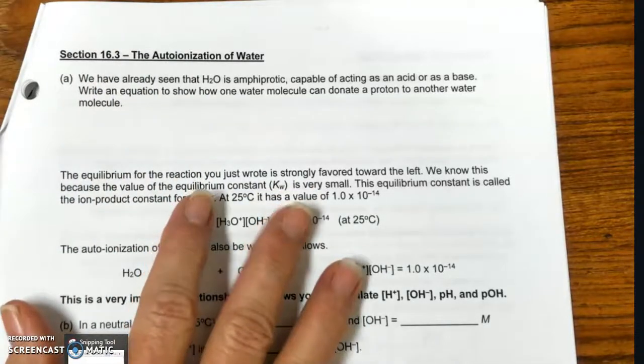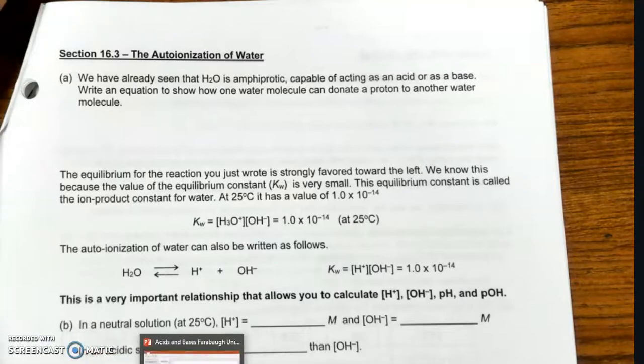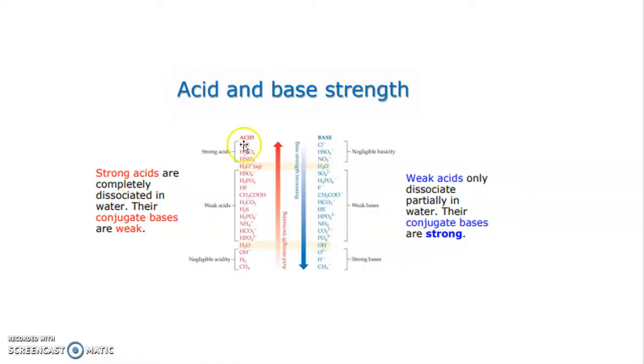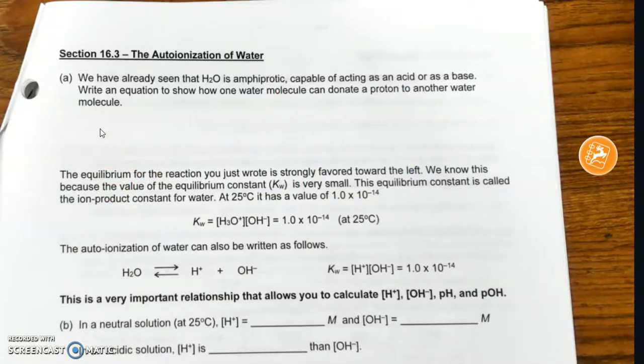Okay, we're in section 16.3. This will just be one video for this particular section. Remember we left off looking at acid and base strengths and conjugate pairs. The strong acid makes the weak conjugate base, and the strong base makes the weak conjugate acid. What we're going to look at now are a series of equations and relationships between acids and bases, primarily in this section with hydroxide and hydrogen ion.